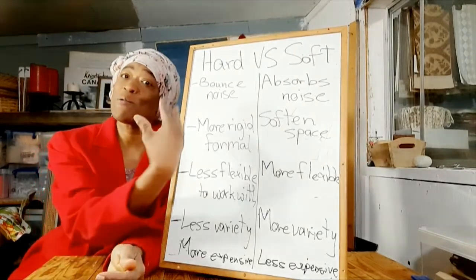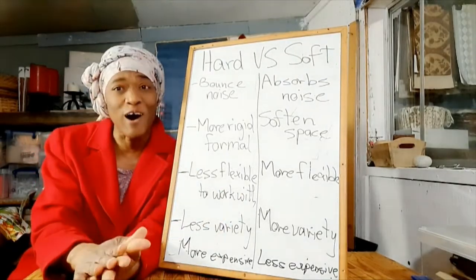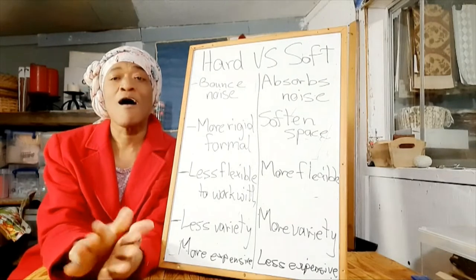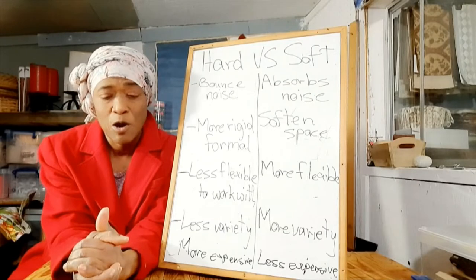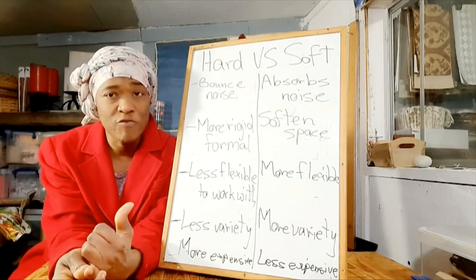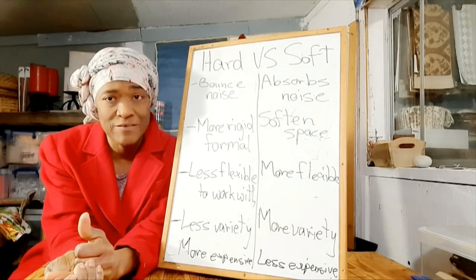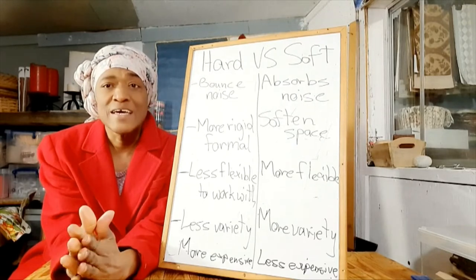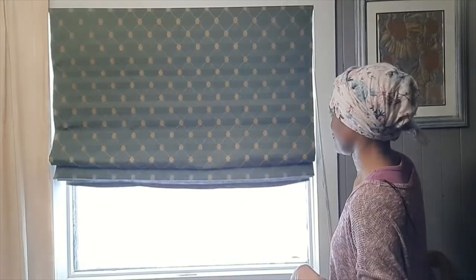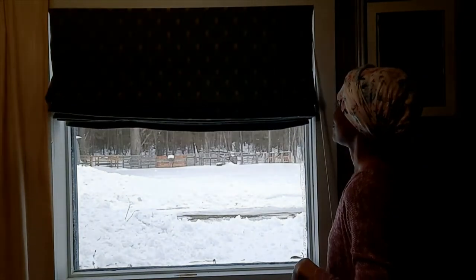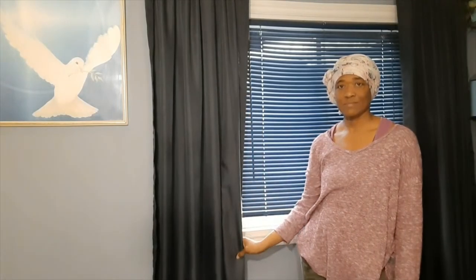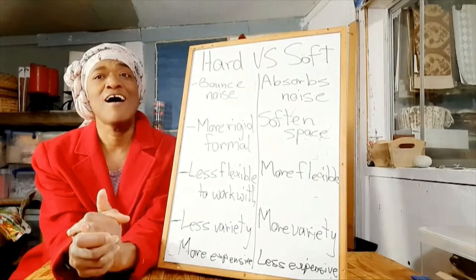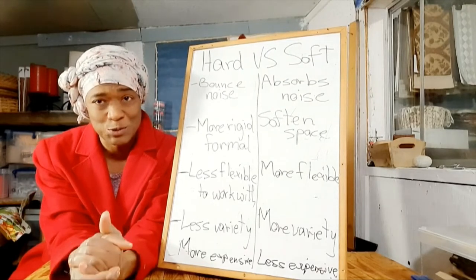As the word suggests, soft window treatments are all window treatments that are made from fabric. Whether it's a woven or a non-woven fabric, it is considered to be a soft window treatment. For example, your Roman blinds that are made from fabrics, your drapery panels — those are all soft window treatments.